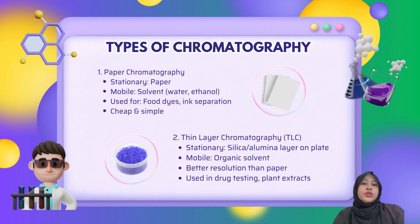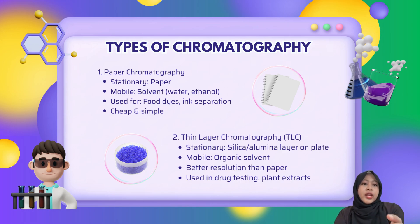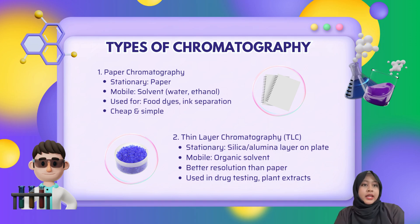Let's look at two common types of chromatography. The first is paper chromatography. The stationary phase is the paper and the mobile phase is usually a liquid like water or ethanol. It's simple, cheap, and often used to separate things like ink or food coloring.